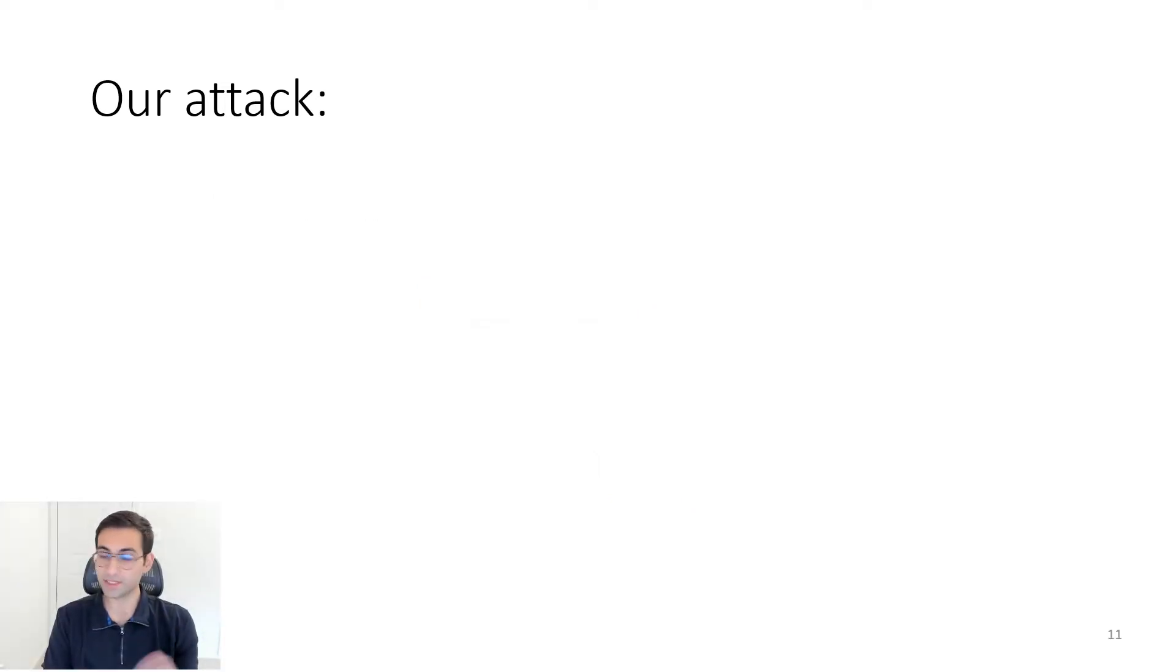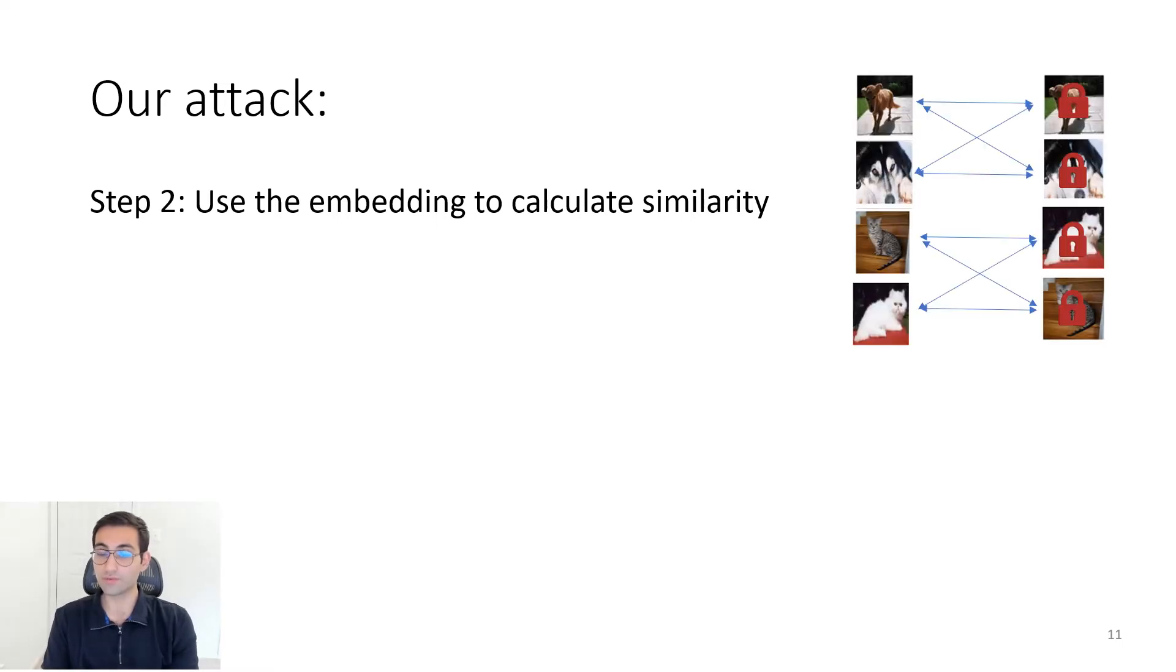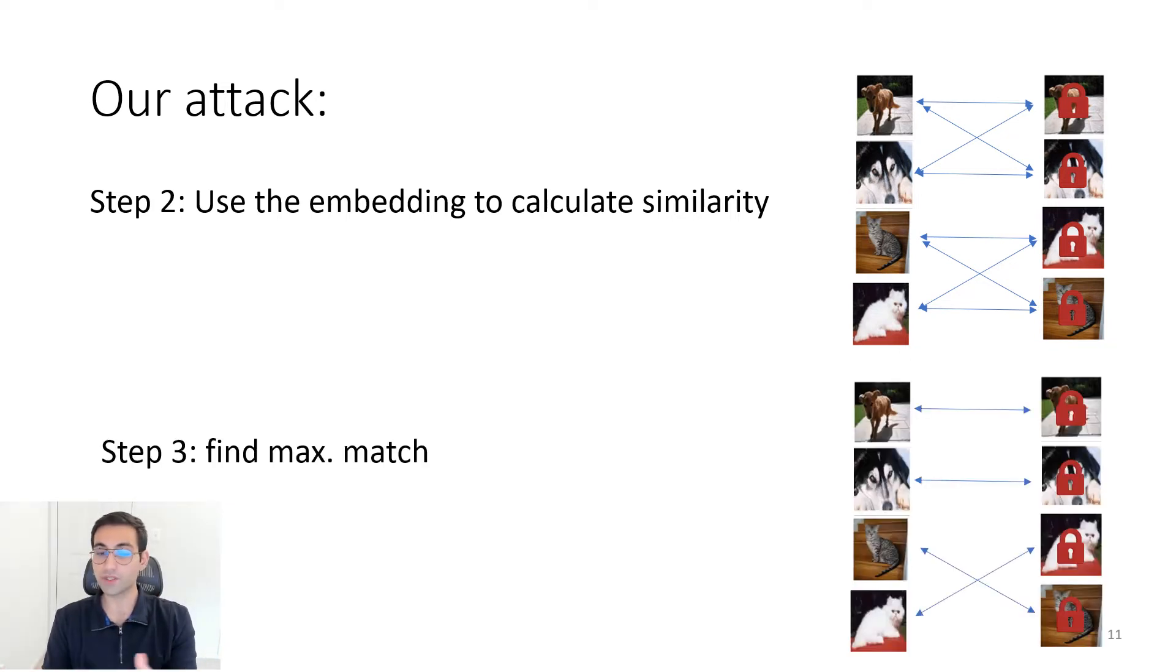After getting this embedding, the remaining steps are simple. In the second step, we construct a similarity graph between images and their encodings. We calculate their distance in the embedding space for each pair. After constructing this graph, in the third step, we find the maximum matching in this bipartite graph. That will be the output of our attack. This attack solves NeuroCrypt challenge with 100% accuracy.